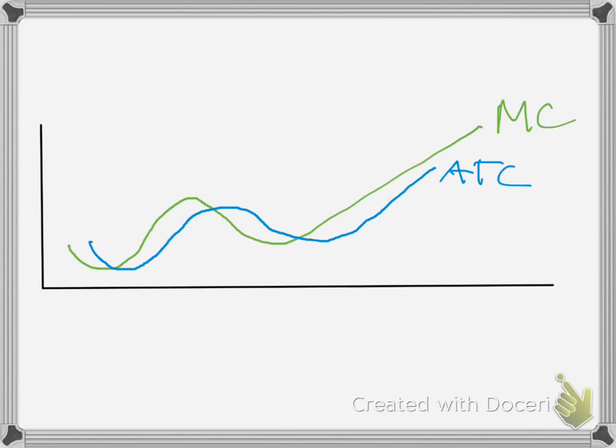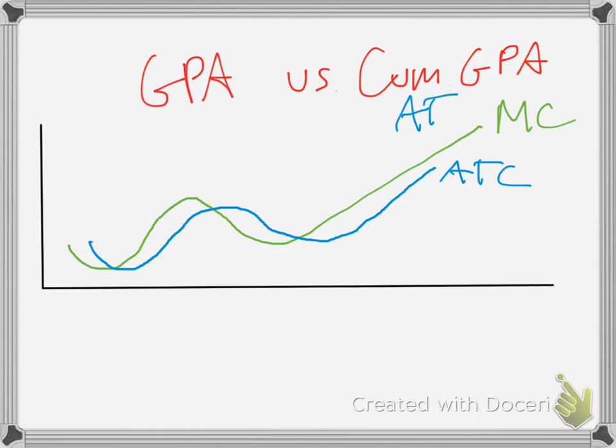So, this would be an example of what the average total cost could look like. You can interpret this kind of as GPA versus cumulative GPA. So, this is like your semester or quarter GPA versus your cumulative GPA, and your cumulative GPA would be your average total cost, and your GPA would be your marginal cost for the quarter, semester, whatever.